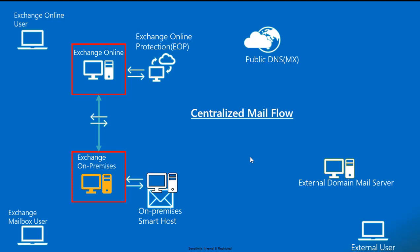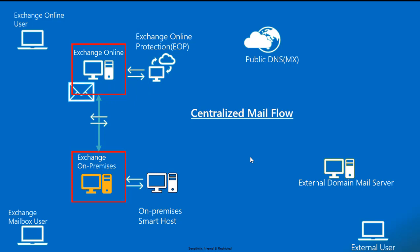The smart host delivers the mail directly to Exchange Online Protection on port 25. Exchange Online Protection receives the email, identifies it as coming from on-premises, and routes it to the Exchange Online mail servers. The Exchange Online transport server then delivers the mail to the appropriate Exchange Online user directly.